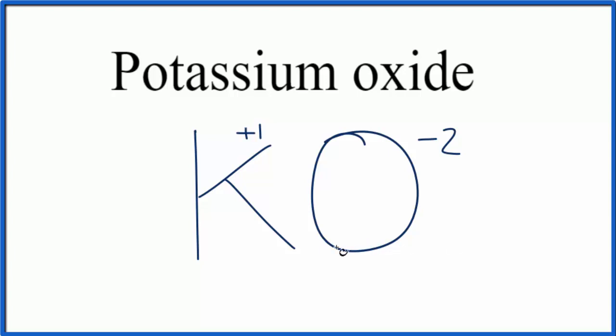So we need to change the subscripts here in order to make them balance. What we can do is if we put a two right here, two times plus one, that gives us a plus two. That'll cancel out our minus two, and that'll give us a formula of K2O for potassium oxide.